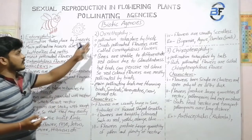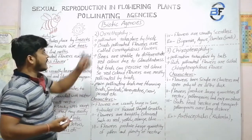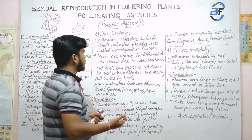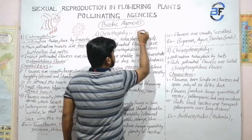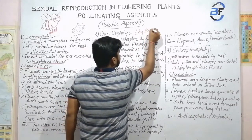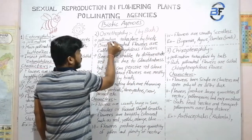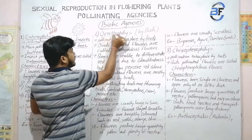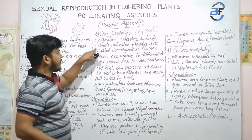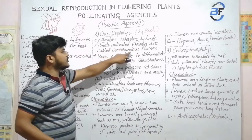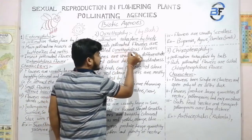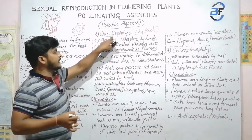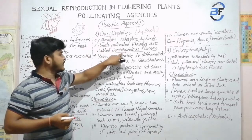Next, after insect pollination, we are going to study Ornithophily technique. In Ornithophily technique, the pollination is carried out mostly by birds. Bird-pollinated flowers are called Ornithophilous flowers — that means the flowers which are included in your Ornithophily technique are called Ornithophilous flowers.